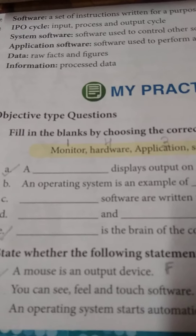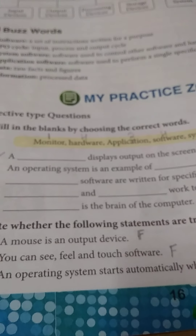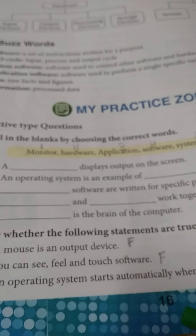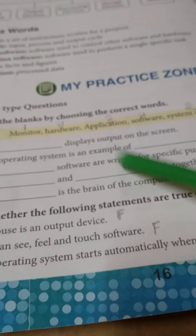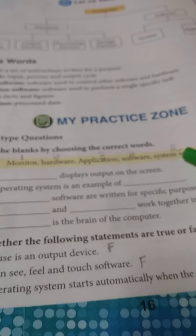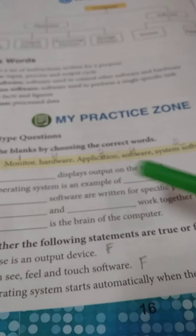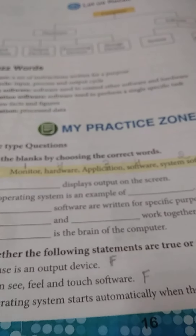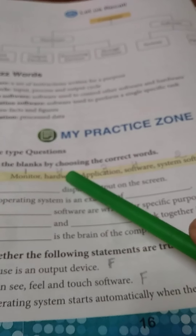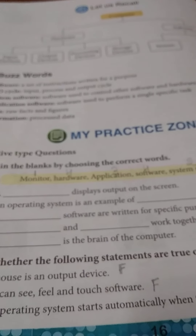Number 1: Objective type question. First, fill in the blanks by choosing the correct one. A: A blank displays output on the screen. The answer is monitor. B: An operating system is an example of system software. C: Blank software are written for a specific purpose. The answer is application software. D: Blank and blank work together in the computer system. The answer is hardware and software work together in a computer system.